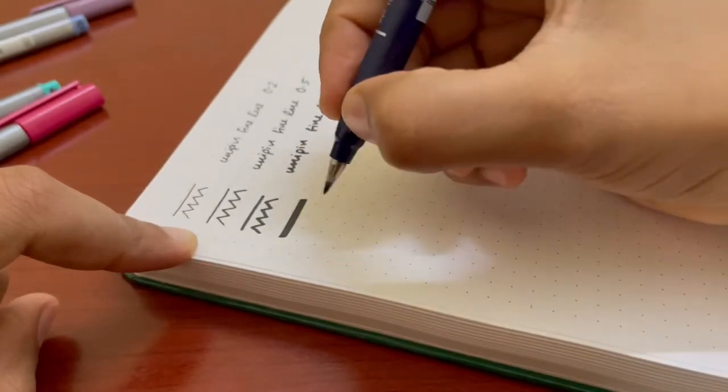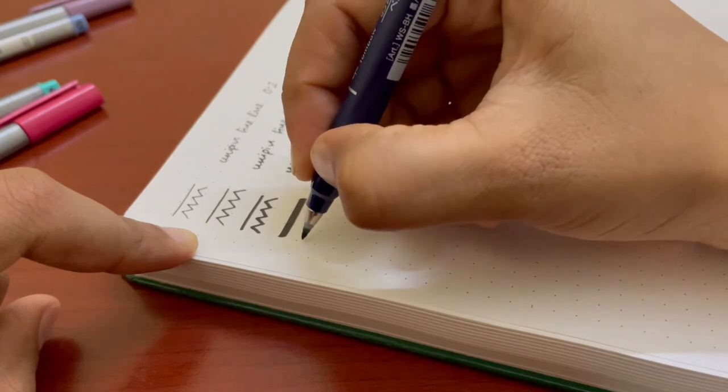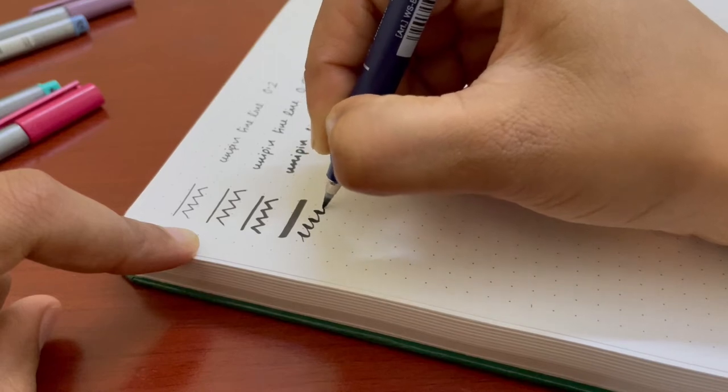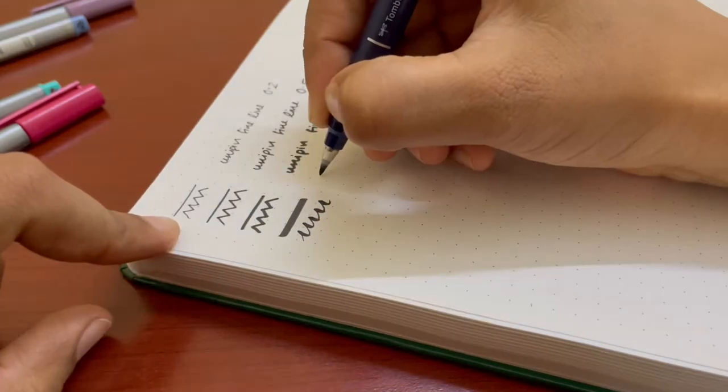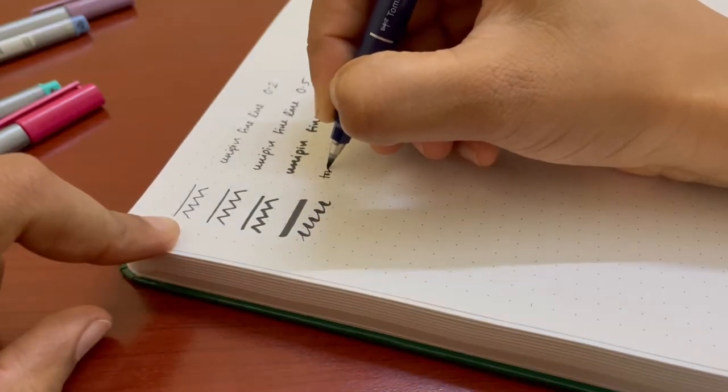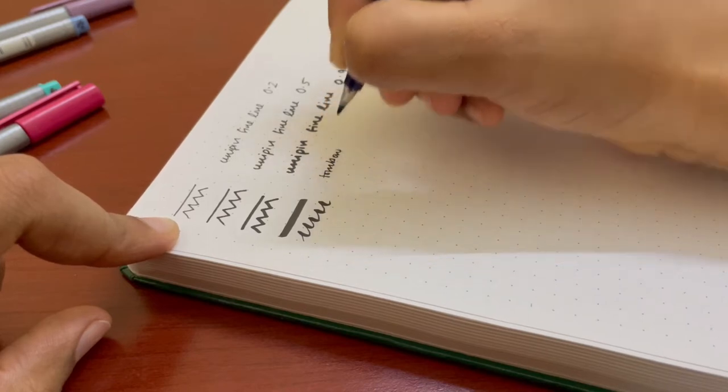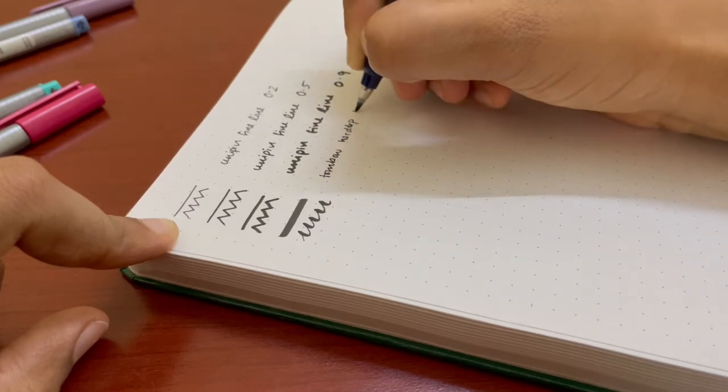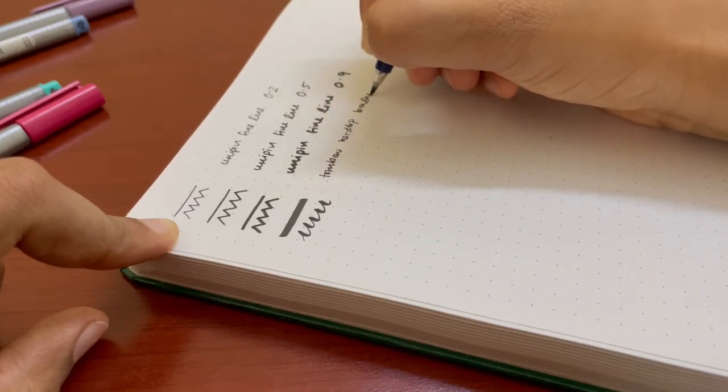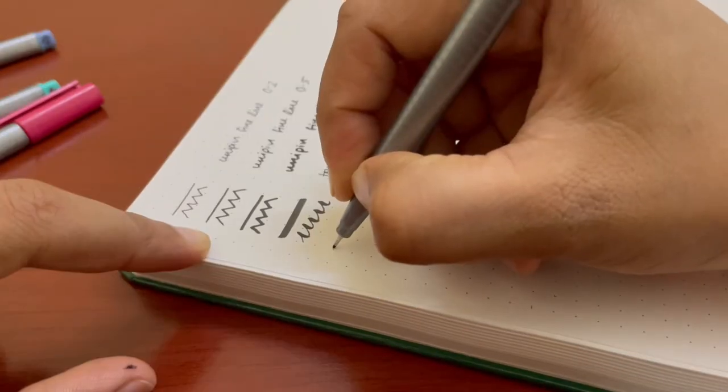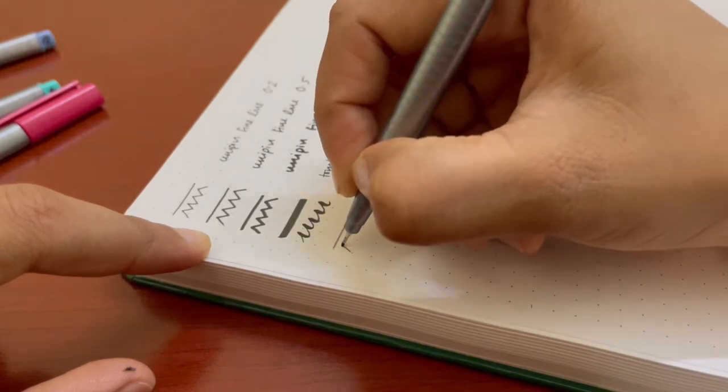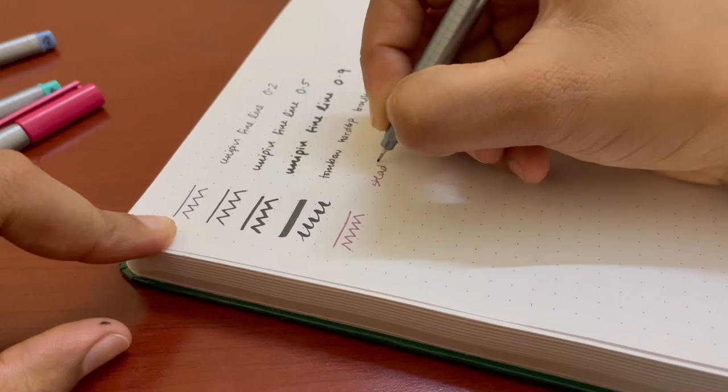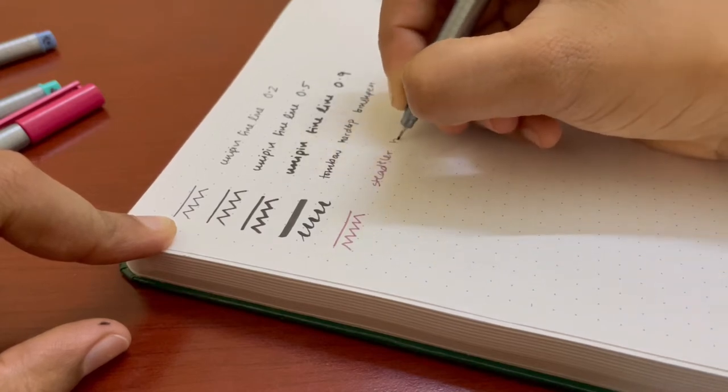Now I have the Fudenosuke hard tip brush pen. These are the Staedtler Triplus fine liners, which I just have four random colors, which I'm trying out over here.